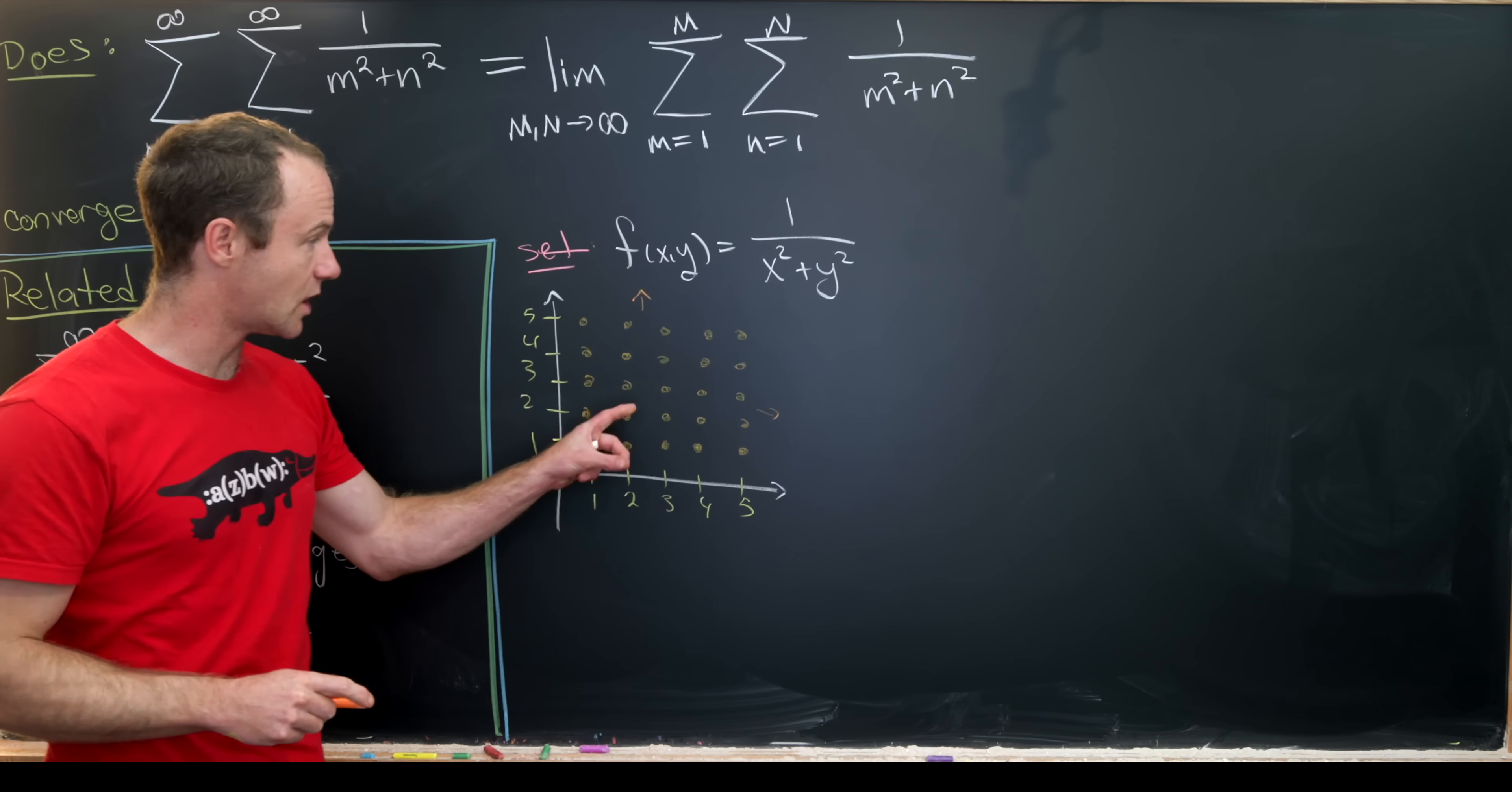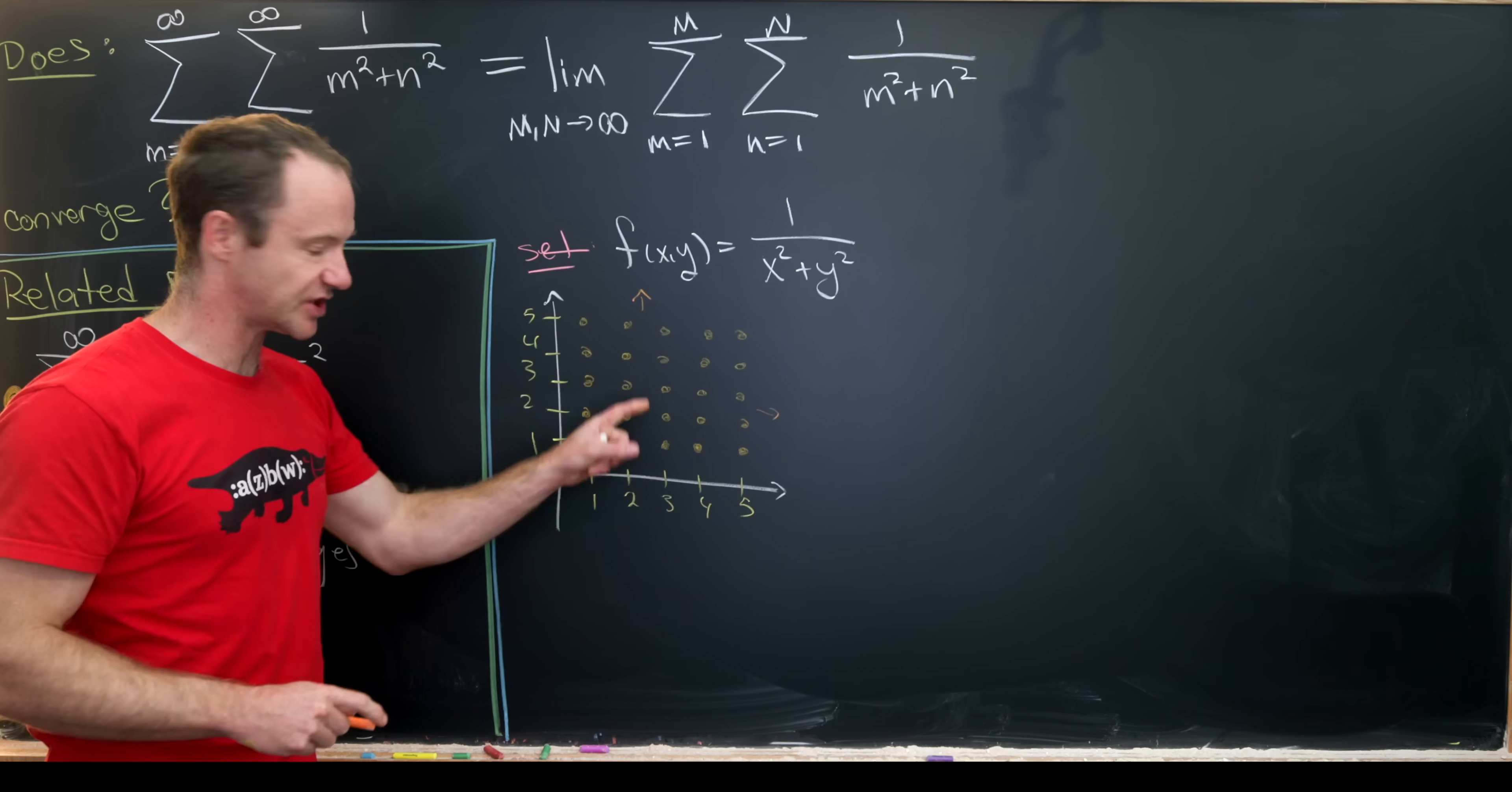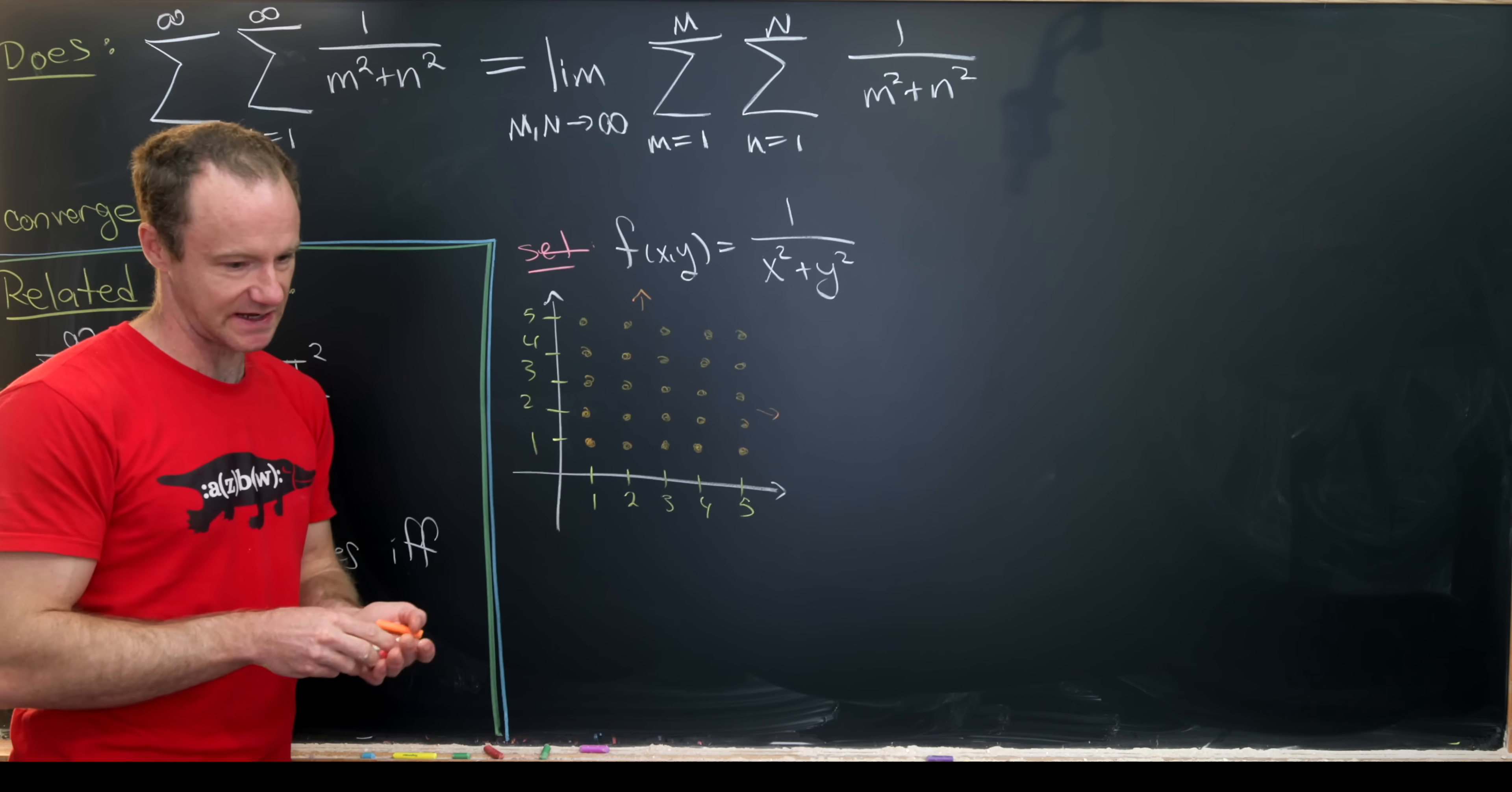So there we've got it. Taking this double sum is like adding up all the values of this function at these lattice points.